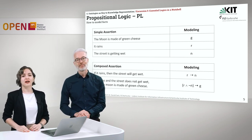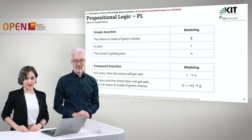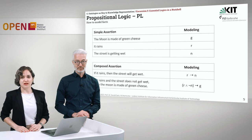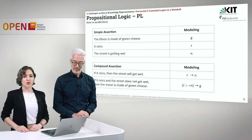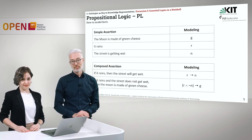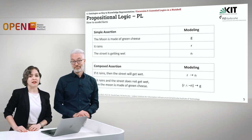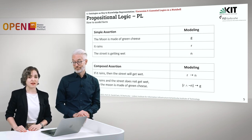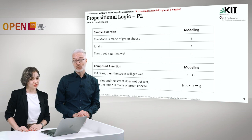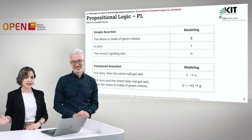Now let's look at some examples of how we can make use of propositional logic. In the table at the top of this page, you can see three simple assertions. The first one: the moon is made of green cheese — let's call this G. The second: it rains — we take R. The street is getting wet — we call this N. If I say 'if it rains, then the street will get wet,' I combine the symbols with logical connectives and say: if R, then N. Let's make this more complicated: if it rains and the street does not get wet, then the moon is made of green cheese — that is: if R and not N, then G.